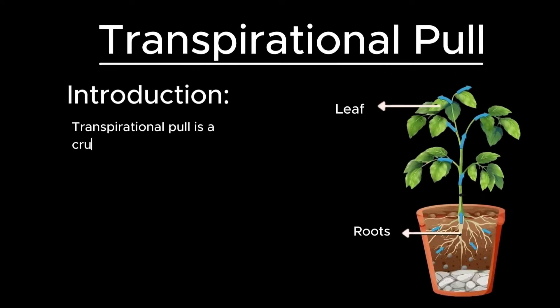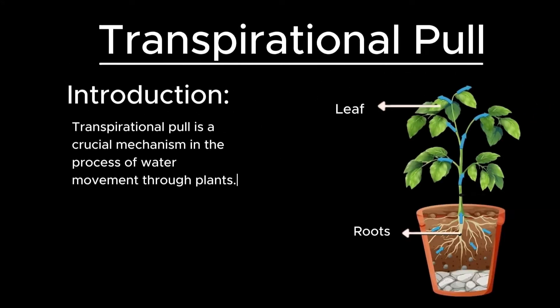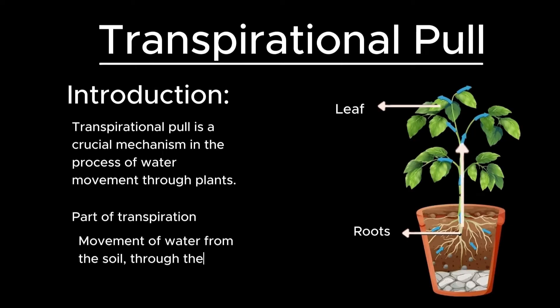Transpirational pull is a crucial mechanism in the process of water movement through plants. It is a part of the larger process known as transpiration, which involves the movement of water from the soil, through the plant, and into the atmosphere. Here's a detailed breakdown of the concept.